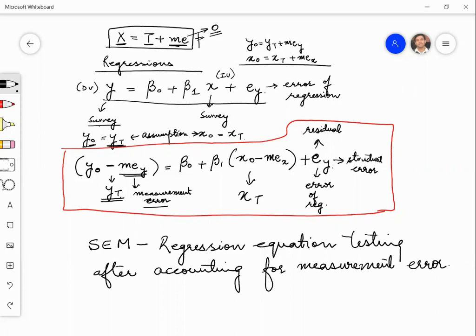After accounting for or after incorporating the measurement errors associated with each measure of the construct, after doing that, when we do regression testing, that becomes the structural equation modeling.